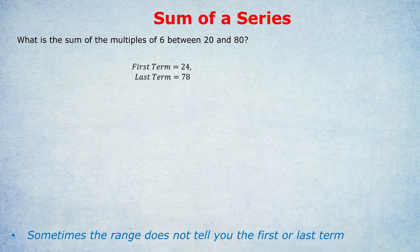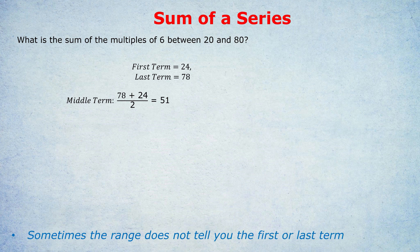Just counting up, basically. Now we have our first and last term. We follow the method. Now, let's test your memory. How do we find the middle term? We do last plus first divided by 2. 78 plus 24 divided by 2 is 51.